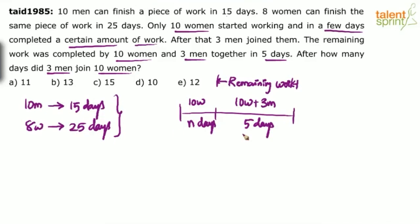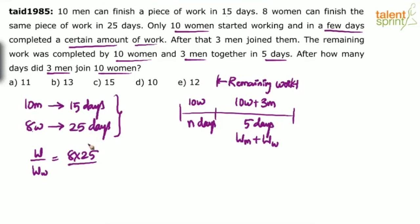If 8 women can finish the work in 25 days, how much work will 10 women do in 5 days? And if 10 men can do the work in 15 days, how much work will 3 men do in 5 days? For the women: 8 × 25 divided by 10 × 5 gives 200 divided by 50, which equals one-fourth of the total work.